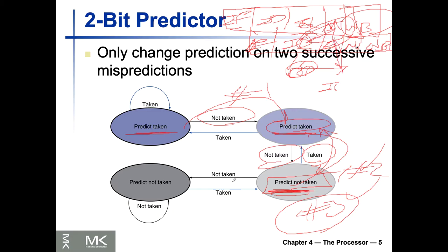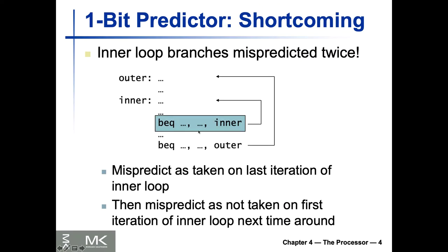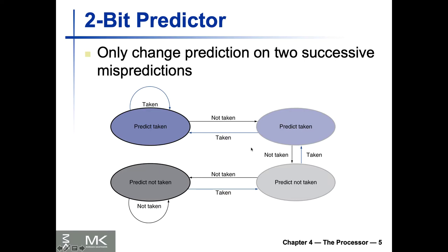We still need one stall even with forwarding because we don't know what the target of the branch will be — are we taking the branch or not? We're not sure whether the target is the inner branch (looping back) or the outer branch (exiting). Because of that, even with optimization and forwarding we still need one stall. But if you say 'I don't care what the target is, my predictor tells me just take the branch,' we can eliminate the stall and go to the next instruction right away.